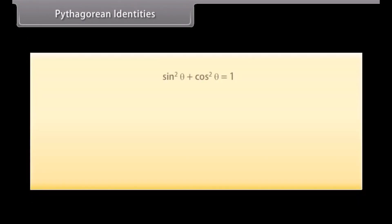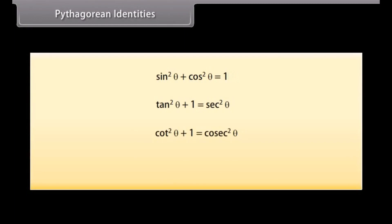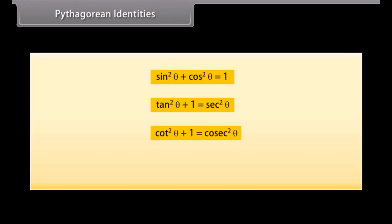Pythagorean identities: Have a look at these identities. sin squared theta plus cos squared theta is equal to 1; tan squared theta plus 1 is equal to sec squared theta; cot squared theta plus 1 is equal to csc squared theta. These identities are the Pythagorean identities.